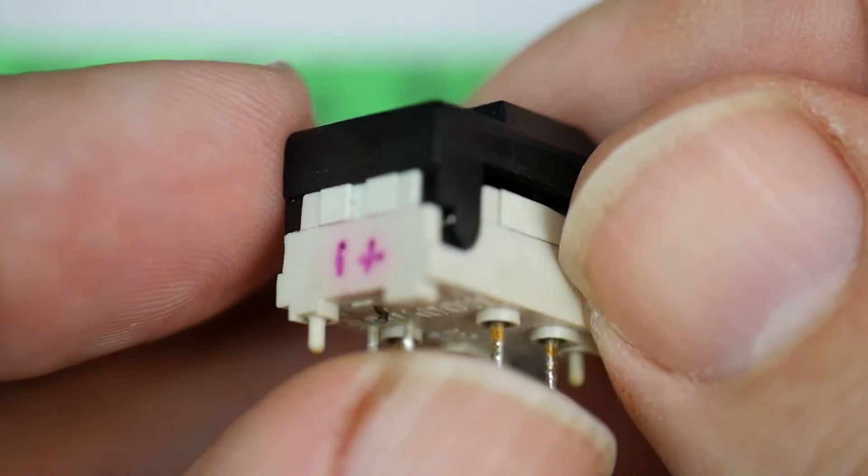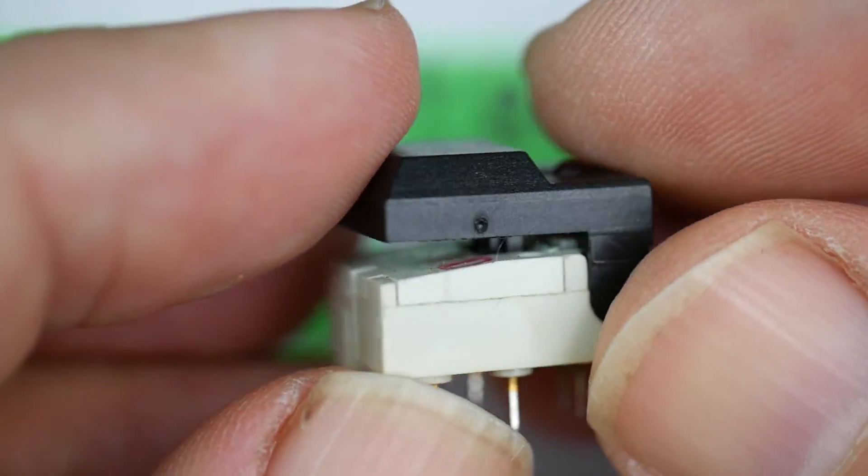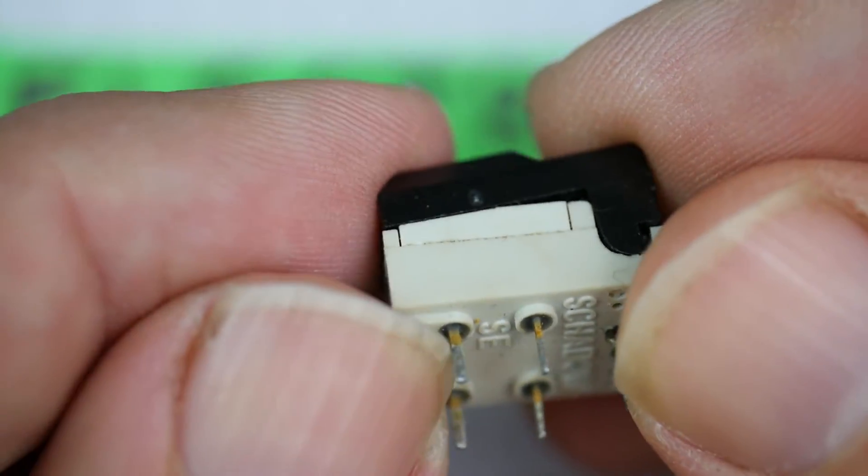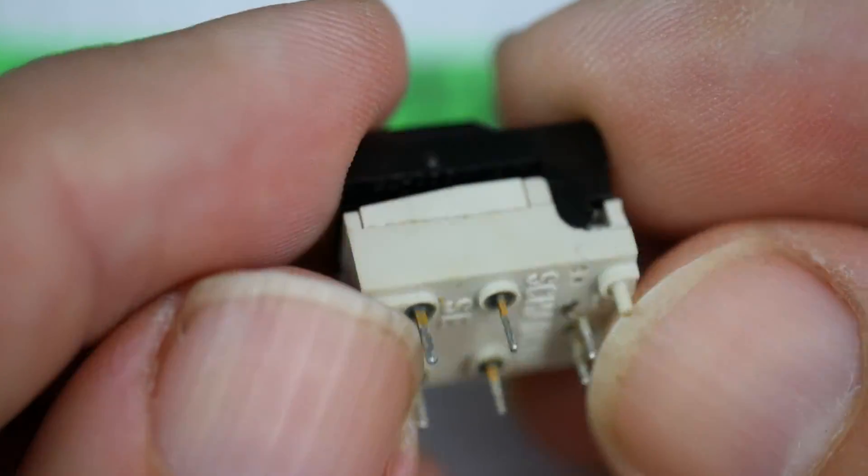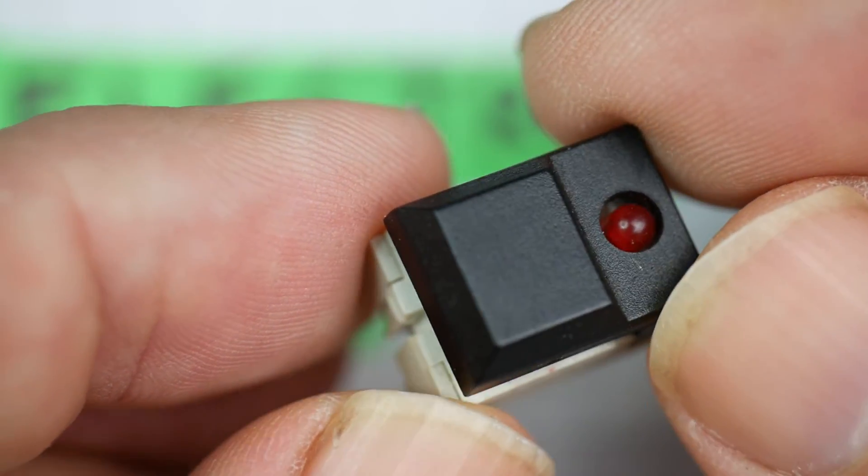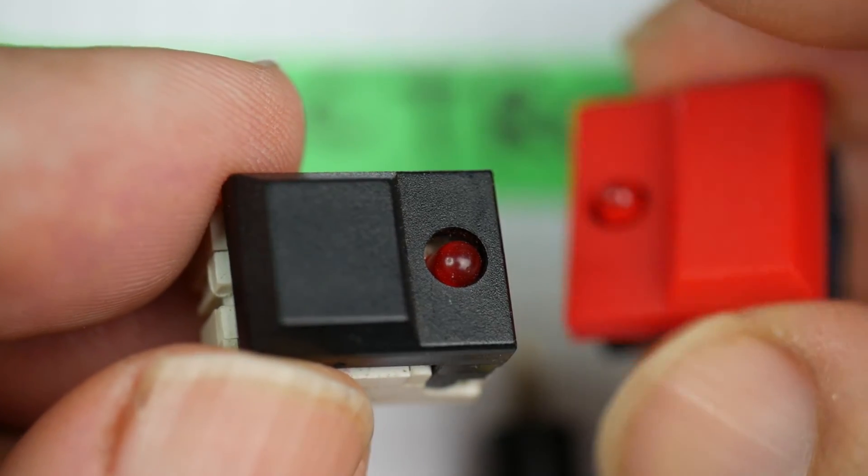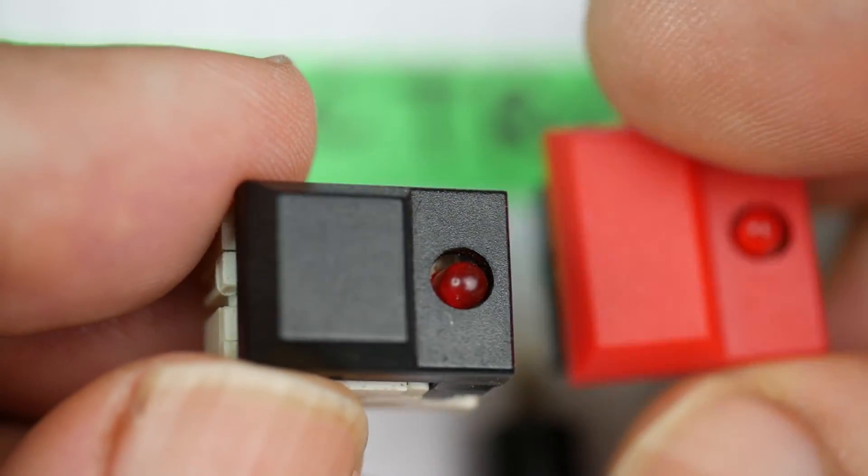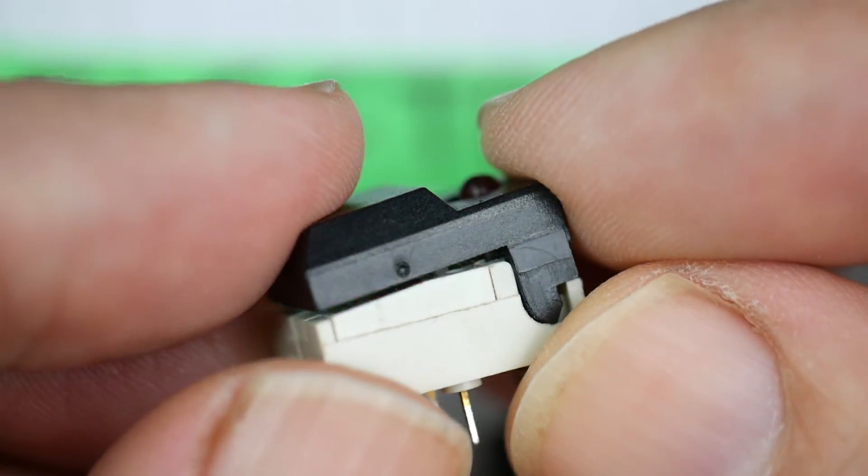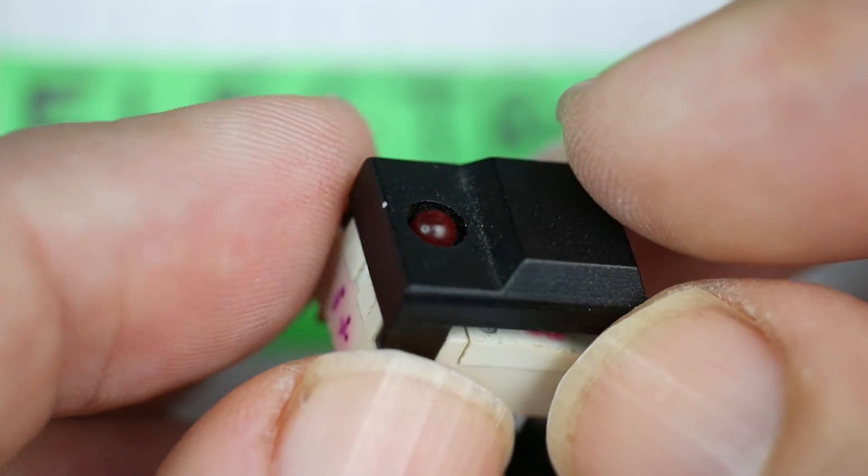So there we have it. That's the Shadow changeover momentary switch. Also available in a latching form that would latch down and have a kind of alternate click on click off format. Available with different coloured buttons, different coloured LEDs, different size. You could get them slightly wider like the modern Chinese one. Rather a nice bit of kit, I think. So that's today's component on the Electro Deli.